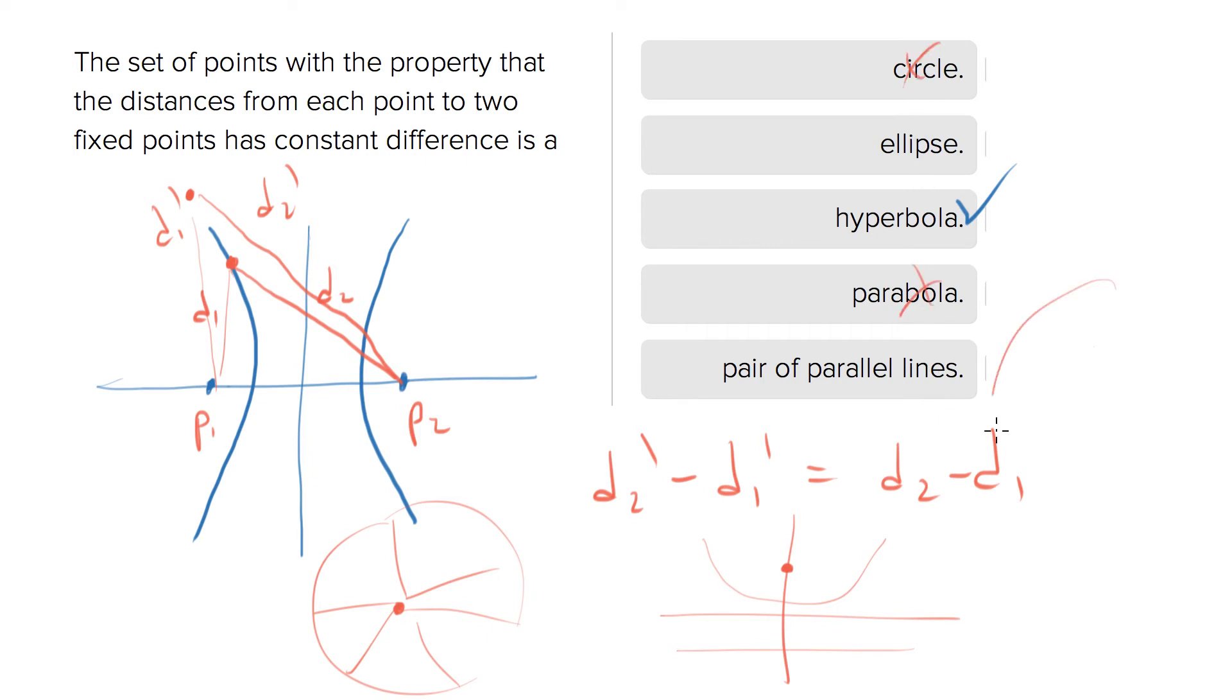Ellipse is all the points that have a constant sum, so all these points have the same sum of distances from the two points.